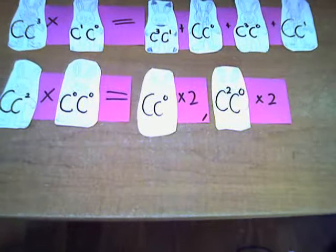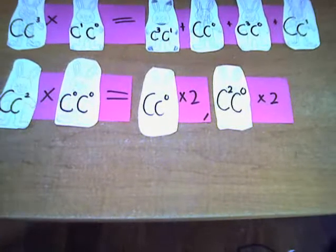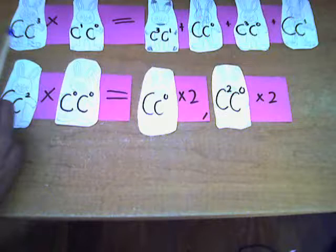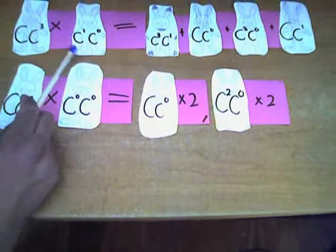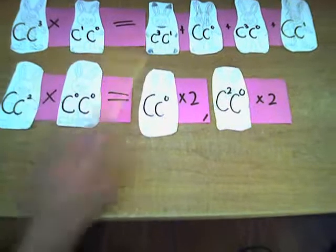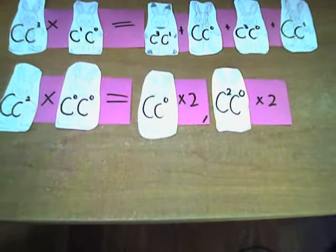So if we start with all five alleles in the population, represented by these four, we cross them such that a dominant crosses with an incompletely dominant C1 and C0, and it results in C3, C1, which would be a chinchilla Himalayan.